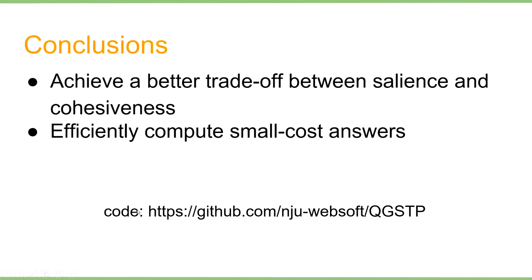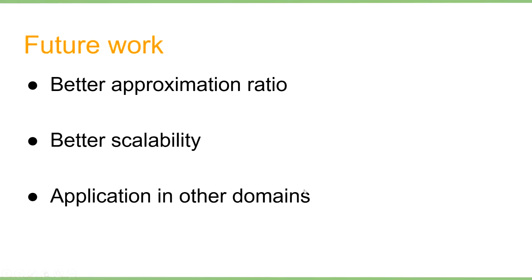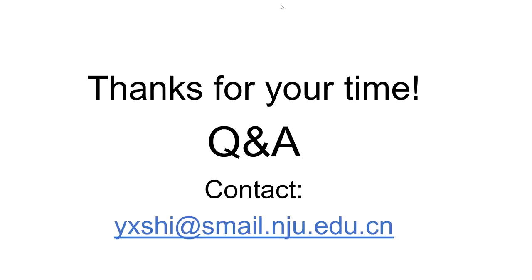In conclusion, algorithms QO and EO achieve a better trade-off between efficiency and cohesiveness, and algorithm EO can efficiently compute small-cost answers. If you are interested, please check our implementation and results on GitHub. In our future work, we hope to find a better approximation algorithm for QGSTP with better approximation ratio and better scalability, and we hope to apply QGSTP to other domains. Thank you for your time.